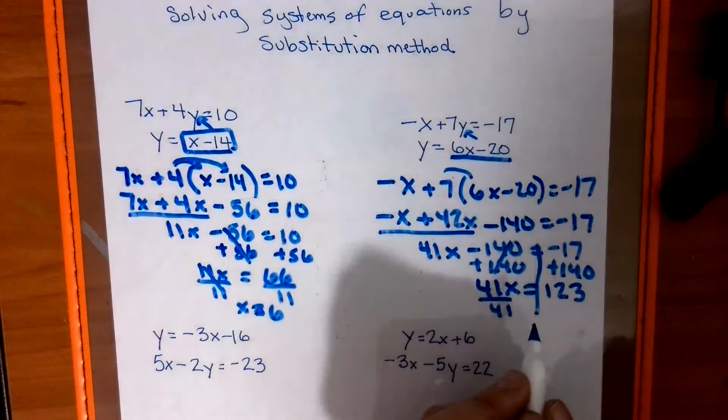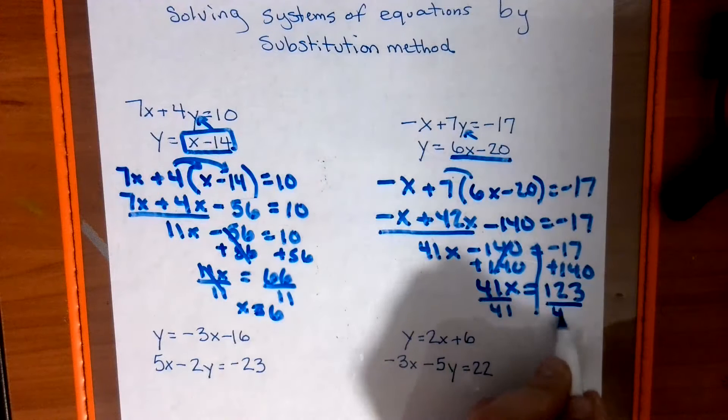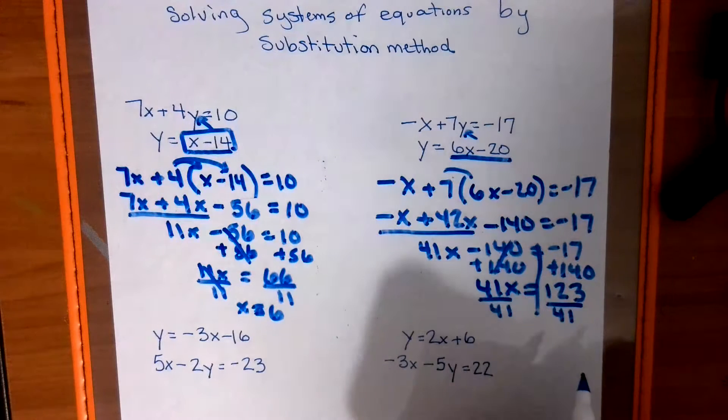41x equals 123, divided by 41. And remember, we've got to put it on both sides. So if we've got to put it on both sides, we'd have 123 divided by 41.